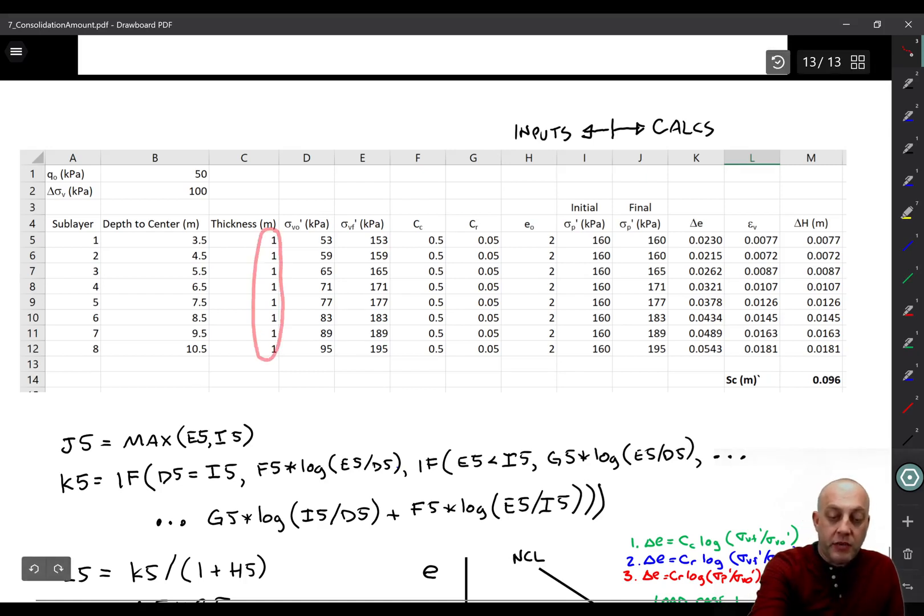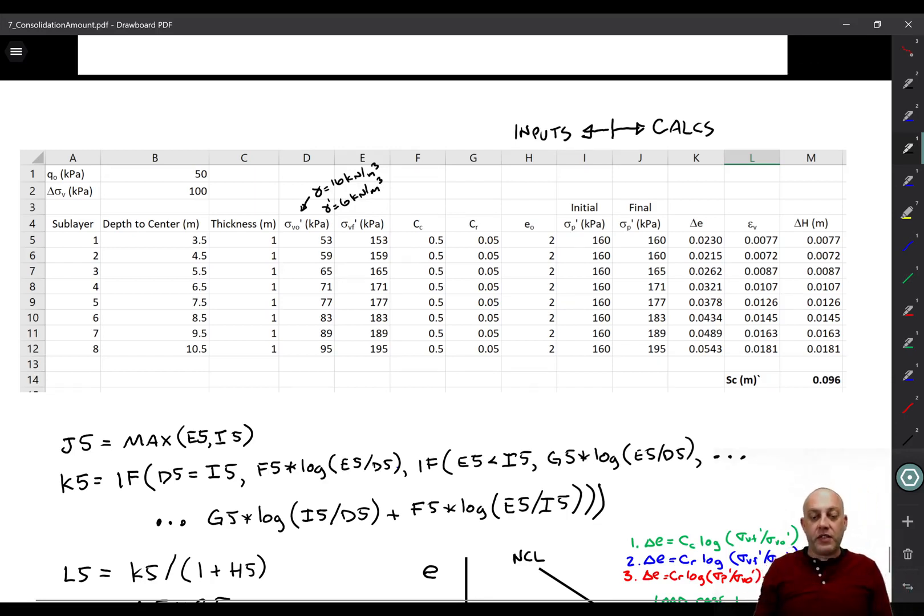Then we have the thickness of each sub-layer, just one meter. Here's the vertical effective stress as we go down. And what I've assumed here is that the clay is below the water table. And that the unit weight of the clay is six kilonewtons per meter cubed. Gamma total is equal to sixteen kilonewtons per meter cubed. That means that gamma prime with buoyant unit weight is six kilonewtons per meter cubed. So you'll see that over this half meter thickness from the depth of three down to three and a half, we've got just three kPa. And then you'll see that each interval below is one full meter, so we're getting an increment of six kPa each time we go down.